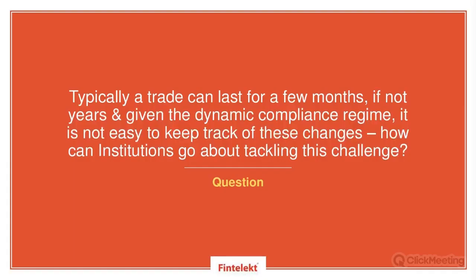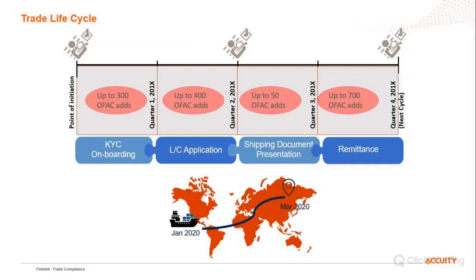Typically a trade can last for a few months, if not years, and given the dynamic complex regime, it's not easy for financial institutions to keep track of changes. Indeed, trade finance has a lifecycle of a few months or more, typically involving onboarding, initiation of trade, shipping documents checking, remittance and shipment of goods. Throughout these activities, watchlists may be updated at different points in time. Screening only during onboarding or when information is received is not sufficient. With dynamic watchlists, continuous delta screening is required to know of any involvement of sanctioned entities promptly.